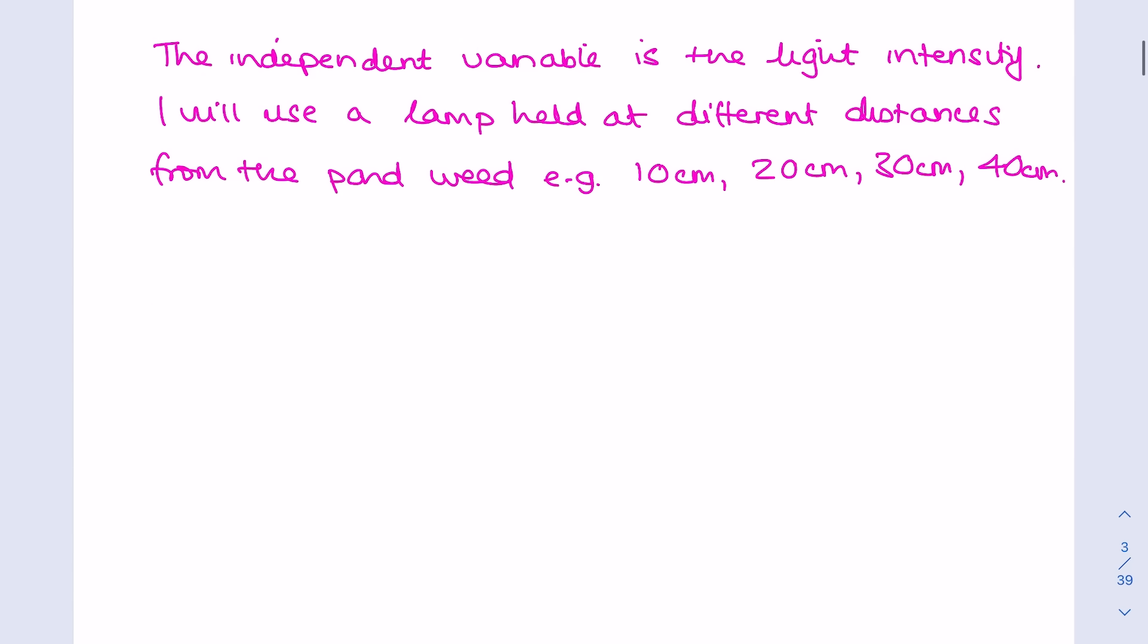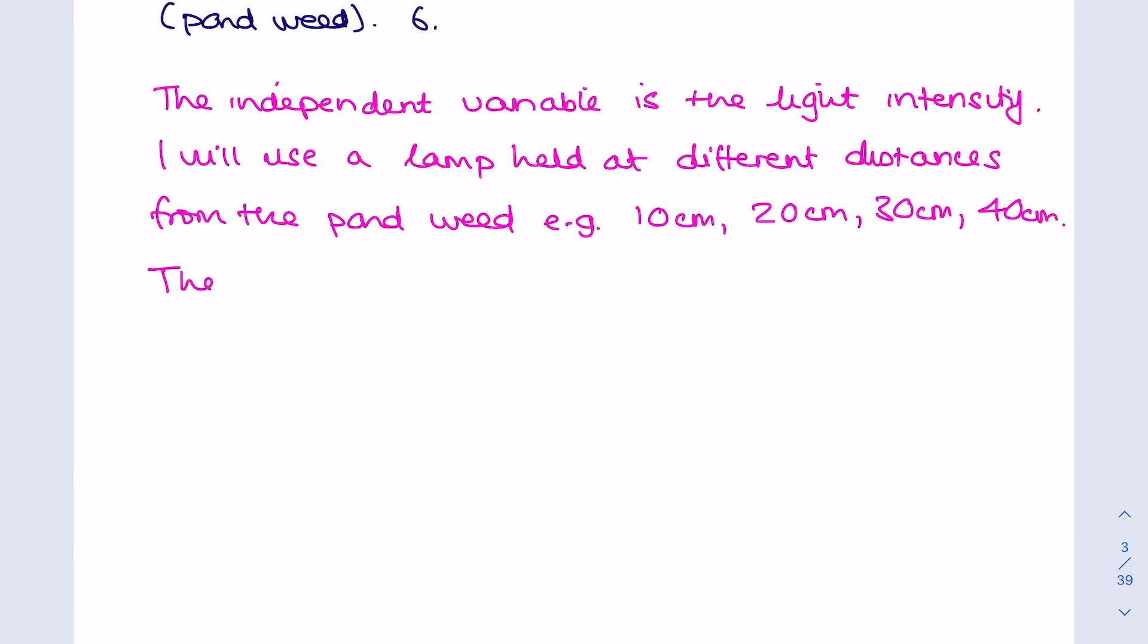What am I measuring now? So the dependent variable? Well it's talking about the rate of photosynthesis, but that's going to be very hard to measure. But if we consider the equation for photosynthesis, one of the products of photosynthesis is oxygen gas. And so I can quite rightly infer that the more oxygen gas that is released, the faster the rate of photosynthesis.